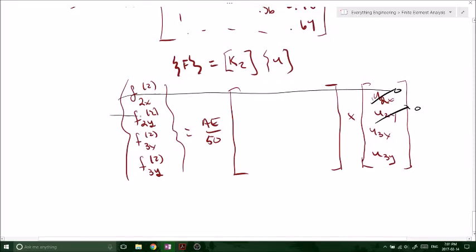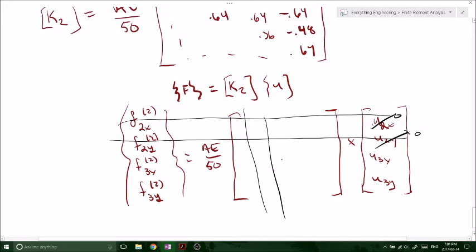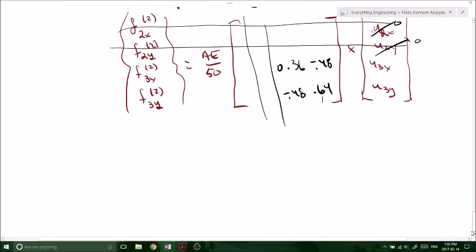Or at node number 2 because we've got a pin support. Another pin. So we're not going to allow any movement. So U2X, U2Y are 0. Therefore, let's cross this out, cross this out, cross that out, and cross that out. So now we've just got 3, or sorry, we're down to 2 by 2 matrix again, right? Exactly the same thing. So now it's really easy, really repetitive.